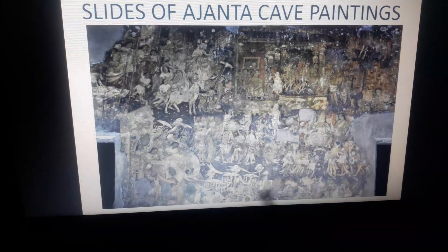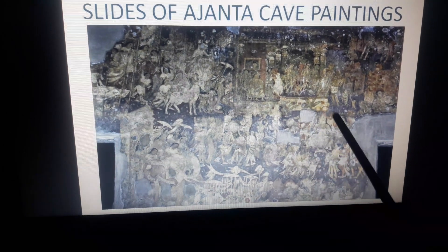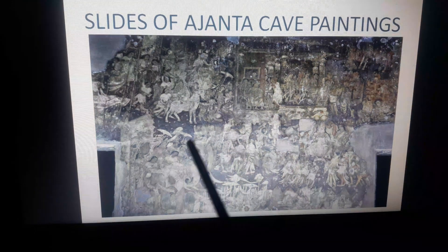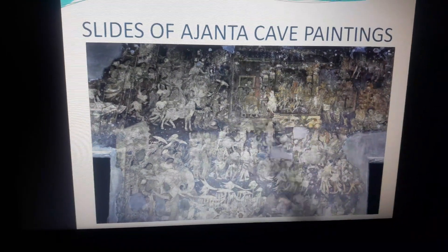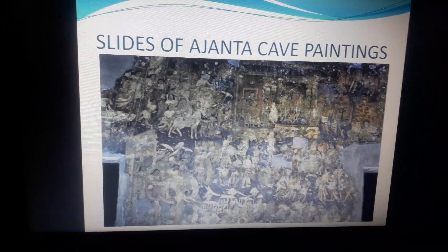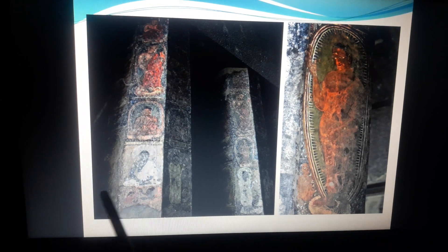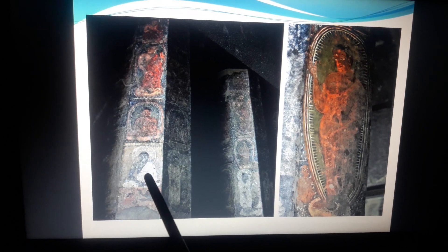Looking at the slides of Ajanta cave paintings: you can see the paintings are filled with figures — female figures dancing, and a main figure of Buddha sitting in the foreground. The background is in dark color while figures are in light color, demonstrating the light and dark contrast. There are also examples of pillars, and images of Buddha sitting with a halo behind his head, draped cloth, in a yogic pose with hands on his lap and crossed legs — symbols repeated to represent Buddha.